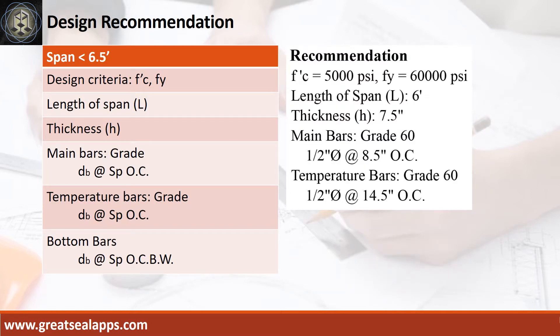Design recommendation as follows: FC' equals 5,000 psi, FY equals 60,000 psi, length of span is 6 feet, thickness is 7.5 inches, main bars of grade 60 ½ inch diameter bar at 8.5 inches on center, temperature bars of grade 60 ½ inch diameter bar at 14.5 inches on center.